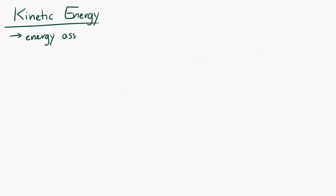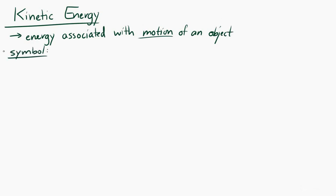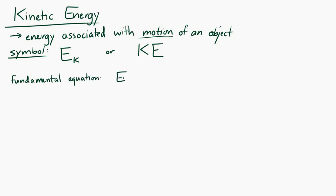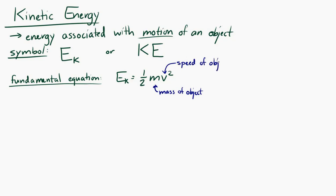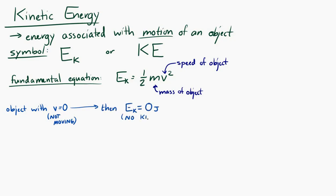Let's look more closely at kinetic energy. Kinetic energy is the energy associated with the motion of an object. The symbol we use is either E with a little k subscript, or capital KE — I'll tend to use Ek. Kinetic energy has an equation: Ek equals one-half mv squared, where m is the mass of the object and v is the speed. If an object has a velocity of zero — it's not moving — then it has no kinetic energy: its kinetic energy is zero joules.